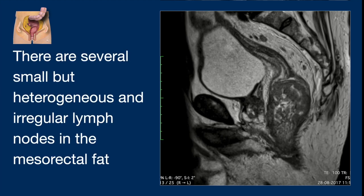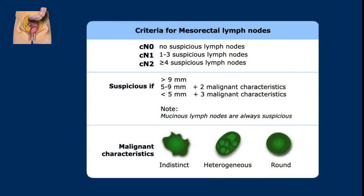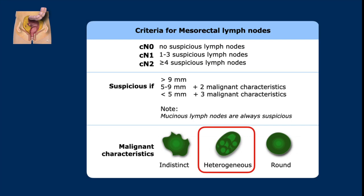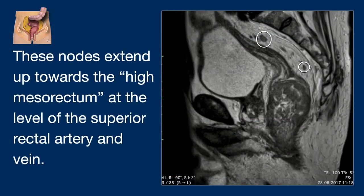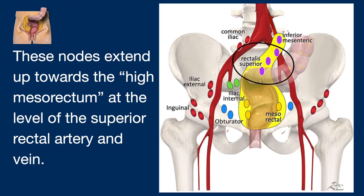There are several suspicious lymph nodes because they are heterogeneous and irregular, located in the mesorectal fat. Mesorectal lymph nodes are suspicious when they have malignant characteristics — an indistinct border, heterogeneous texture, or round shape. When they have these three malignant characteristics, even nodes smaller than 5 mm are suspicious. Nodes between 5 and 9 mm only need two malignant characteristics, and lymph nodes larger than 9 mm or mucinous nodes are always suspicious. These nodes extend up towards the high mesorectum at the level of the superior rectal artery and vein, which is important information for surgery or irradiation.